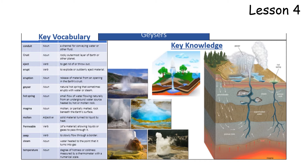We know about eruptions and erupting. Geyser — the actual definition, the noun — is the name for a natural hot spring that sometimes erupts with water or steam. Hot springs are a small flow of water flowing naturally from an underground water source heated by hot or molten rock from beneath the ground.